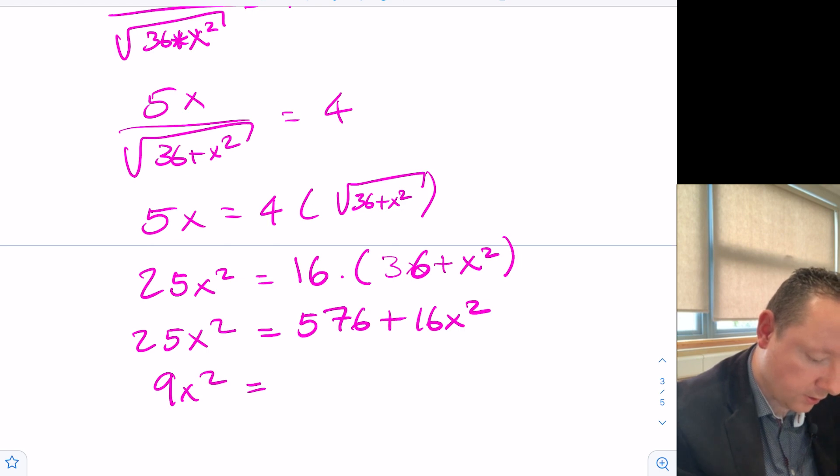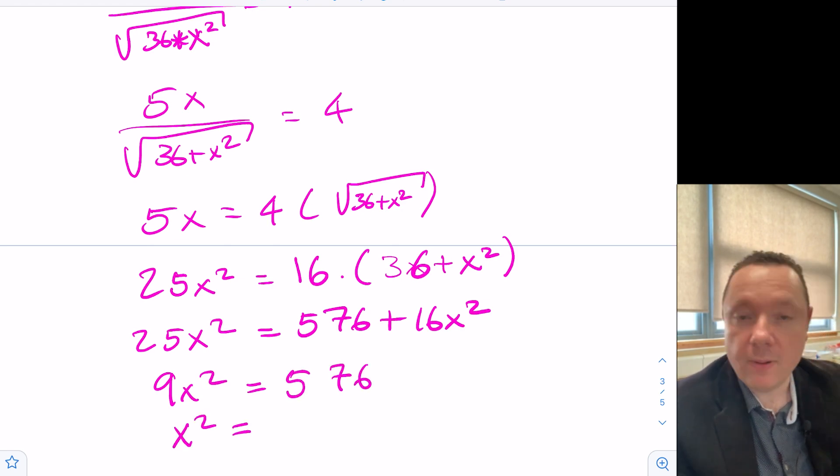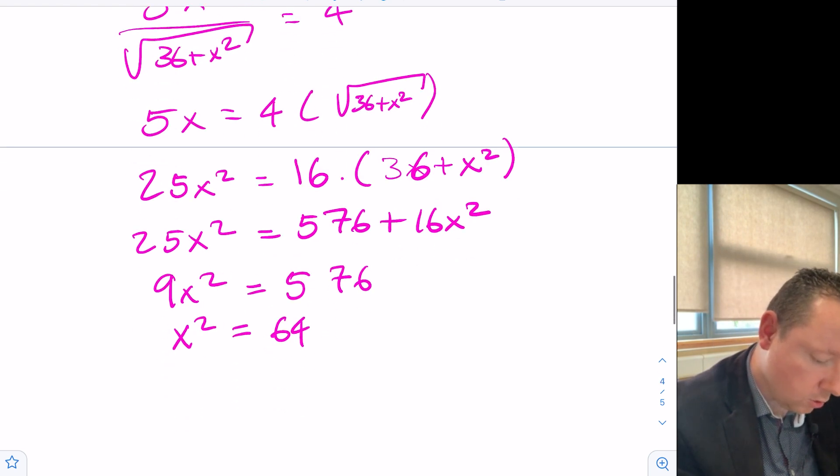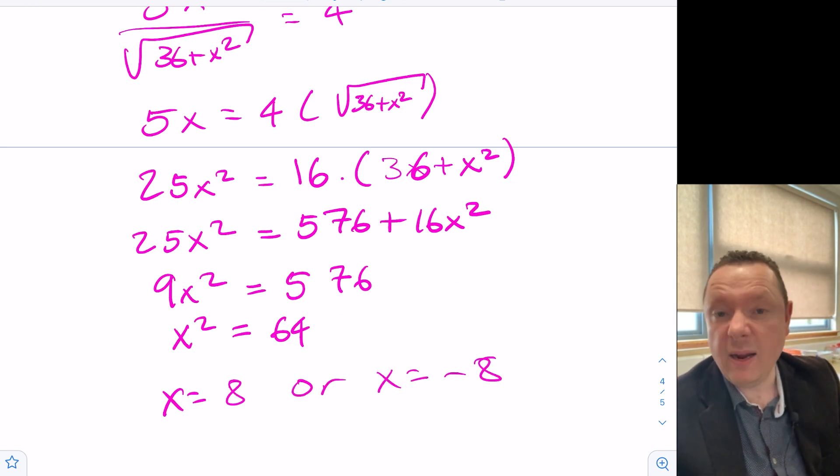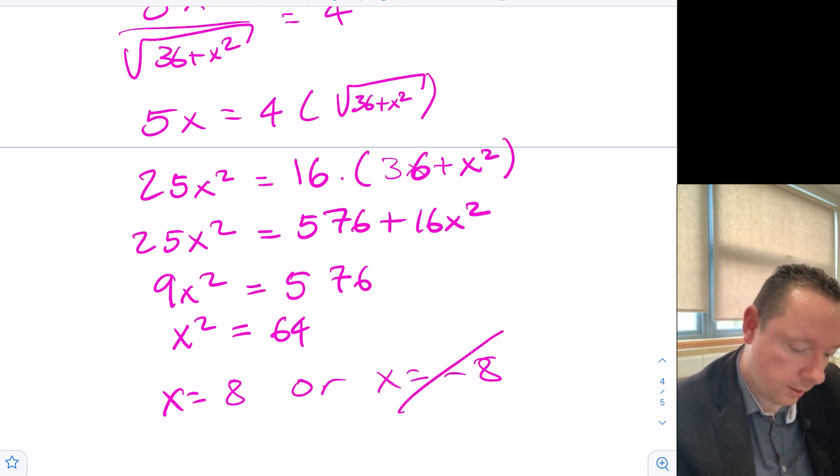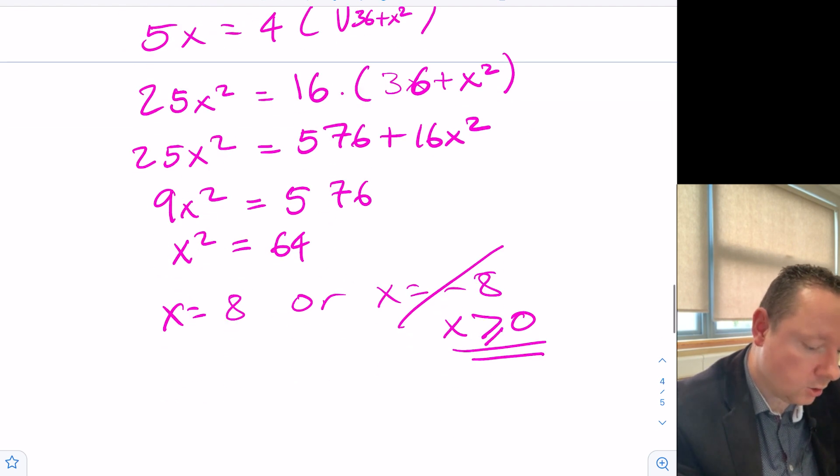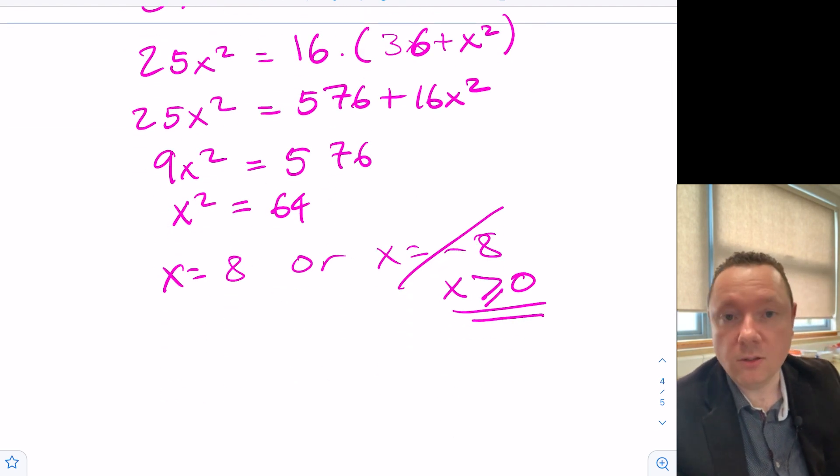Moving that x squared over to the other side taking away 16 you get 9x squared is 576. So x squared is divided by 9, 64. So x equals 8, or x equals minus 8, but straight away, minus 8 is not valid because x has to be a positive number. x is greater than or equal to 0. So x equals 8 is our number, so the minimum time taken occurs when x equals 8.